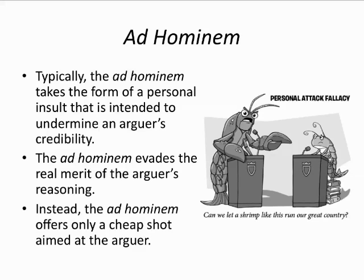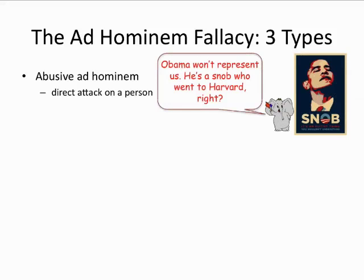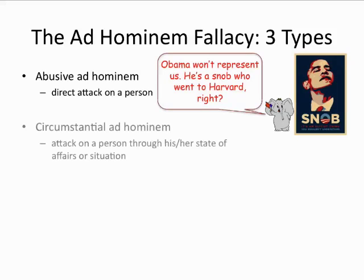We'll look at three distinct types of ad hominem. First, the abusive ad hominem, which is a direct attack on a person rather than his or her argumentative position. Here's a quick example: "Obama won't represent us — he's a snob who went to Harvard."